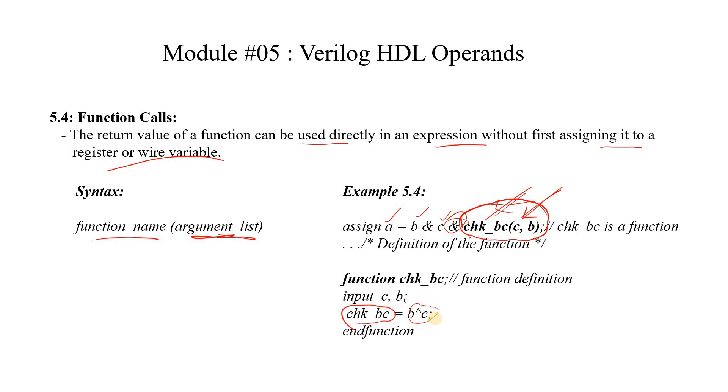This is the return value from this function check bc which is b xor c. We will cover functions in more details in one of our modules during Verilog HDL crash course. But here I want to tell you how a function call can be used as an operand in an expression. I hope the operand concept is clear.